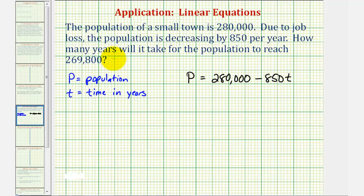And now to answer the question, how many years will it take for the population to reach 269,800? We'll substitute 269,800 for P and solve for T. So we'd have the equation 269,800 equals 280,000 minus 850T.